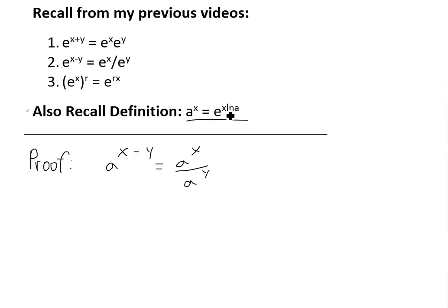Basically to prove this, we use this definition right here and we could write a^(x-y) using this definition right here, which is going to be e to the power of, and here we replace this x right here with x minus y. So we go x minus y.